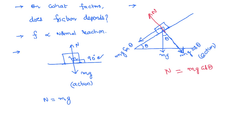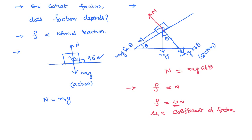Therefore, normal reaction is simply the reaction applied by the lower surface on the upper surface, equal and normal to the surface of contact. Once you have a basic idea of normal reaction, we can say friction is directly proportional to normal reaction. We can eliminate the proportionality by introducing a constant called the coefficient of friction, denoted by mu. Be careful to know that mu is not dependent on either the frictional force or the normal reaction. If you double the normal reaction, the frictional force doubles, but mu remains constant. Mu depends on the nature of the surface.